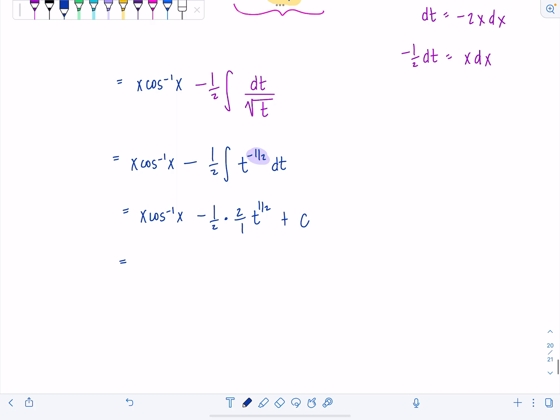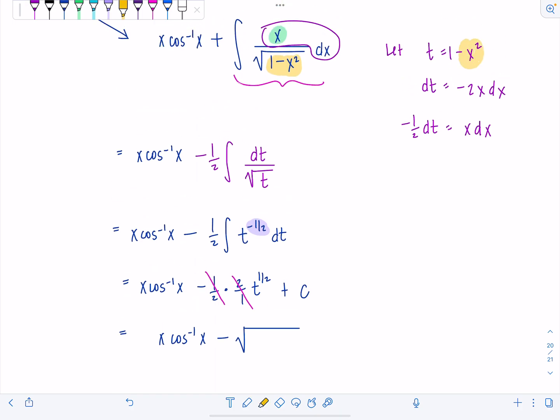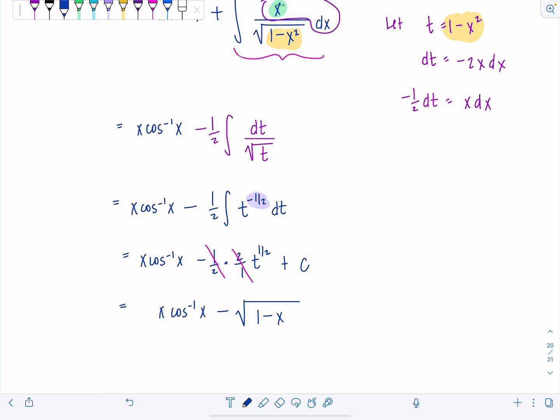Almost there. This 1 half and 2 cancels. I can write this as x cosine inverse of x minus, instead of t to the 1 half, I'm going to rewrite that as square root, not t. What was t equal to originally? 1 minus x squared. Come back to us, 1 minus x squared. We need you now. Plus c. So there it is. There you have it. This is the anti-derivative of cosine inverse of x dx.